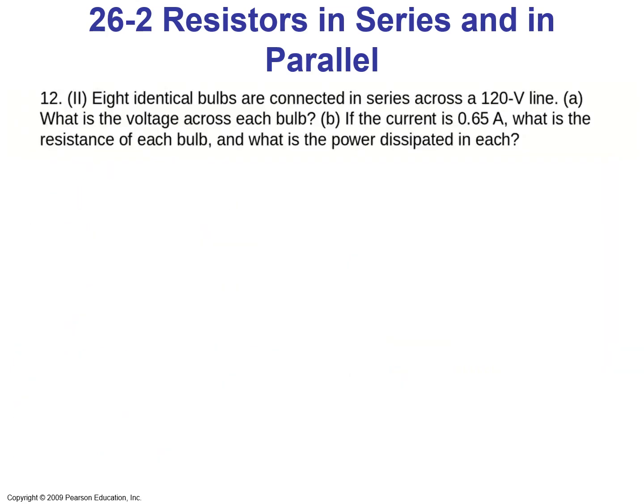As an example, let's look at problem number 12 from the book. Eight identical bulbs are connected in series across a 120-volt line. Part A asks: what is the voltage across each bulb? Each bulb should get one-eighth of the total voltage. The resistors are connected in series, so R_eq equals 8R.